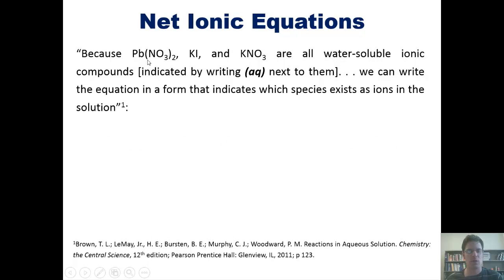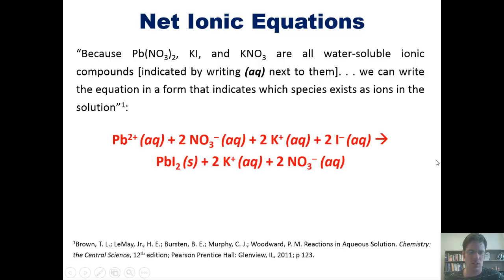Now, because lead nitrate, KI and KNO3 are all water-soluble ionic compounds, indicated by writing (aq) next to them, and if you look back at the previous slide, they totally all are, we can write the equation down here in a form that indicates which species exist as ions in solution. So once again, the idea is that lead nitrate, KI, and all these things are all water-soluble. So as soon as you throw them into water, they'll separate out into their individual ions. So lead nitrate separates out into an individual atom of lead 2 plus and two separate polyatomic ions of nitrate, NO3 minus.